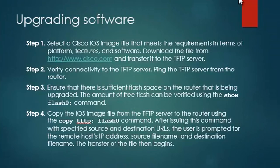To upgrade the software on a Cisco router, follow these steps: Step 1, select a Cisco IOS image file meeting requirements for platform, features, and software — download from Cisco's website and transfer to a TFTP server. Step 2, verify connectivity to the TFTP server by pinging it from the router. Step 3, ensure sufficient flash space on the router using the show flash command. Step 4, copy the IOS image file from the TFTP server to the router using the 'copy tftp flash' command, specifying the remote host IP address, source file name, and destination file name.